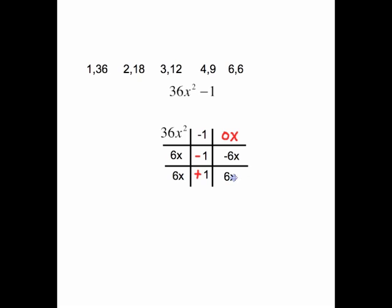Multiply across. 6x times negative 1 is negative 6x. 6x times positive 1 is positive 6x. These two things cancel out, giving me the 0x in the middle. Group on the diagonal, and you have a 6x plus 1 and a 6x minus 1.